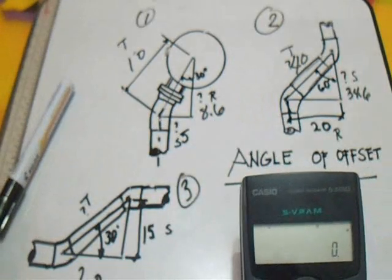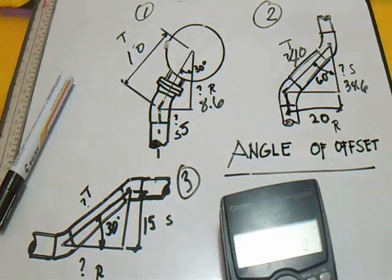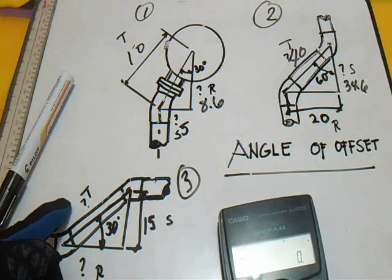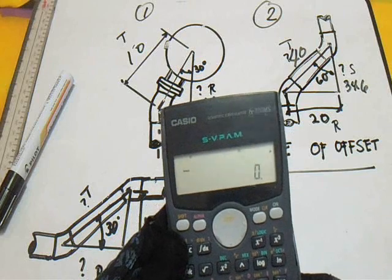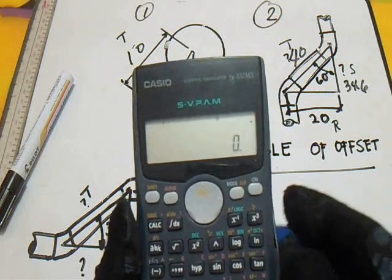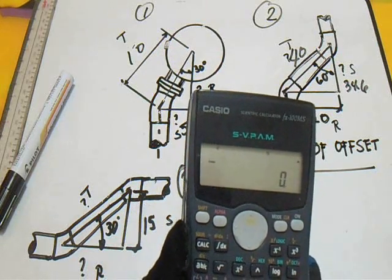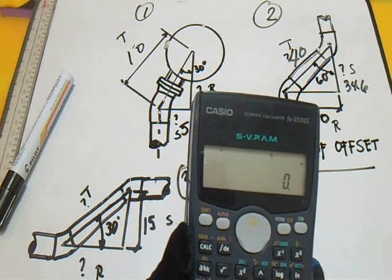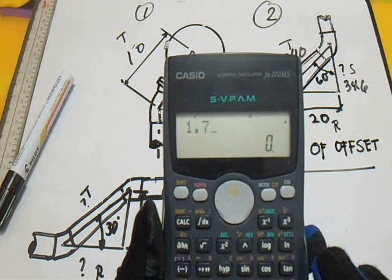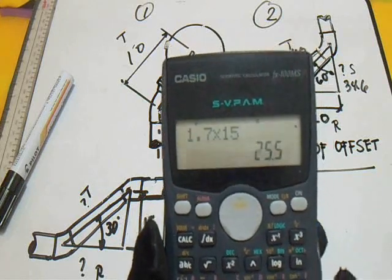Next, question number three. The given is set = 15 and 30 degrees, so let's find the run and travel. For the run, we use cotangent of 30 degrees, which is 1.7, multiplied by 15. So our run is 25.